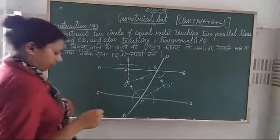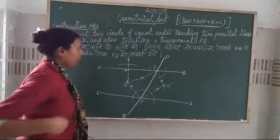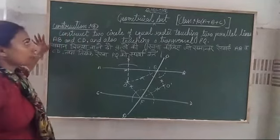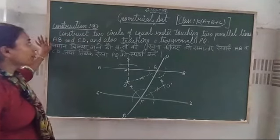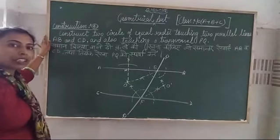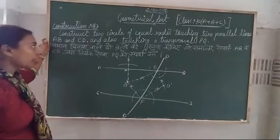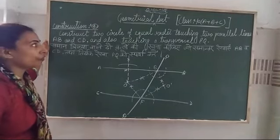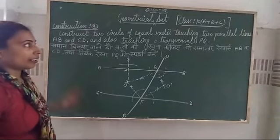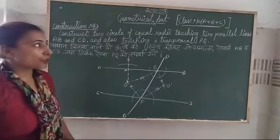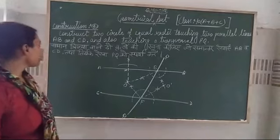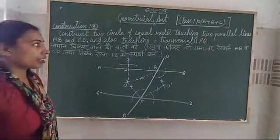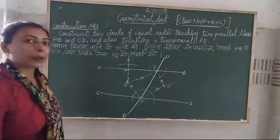So, polyglas, let's go. The vector and constructions will solve the problem. Constructions: these are constructed to circles of equal value, accustomed to parallel lines AB and CD, and also transversal PT.